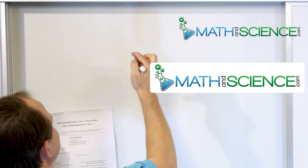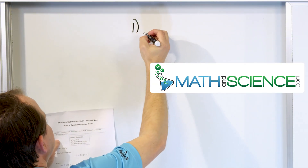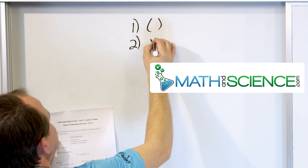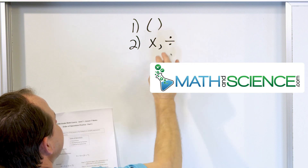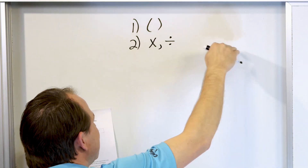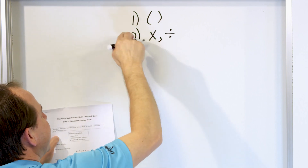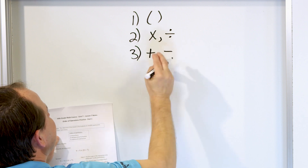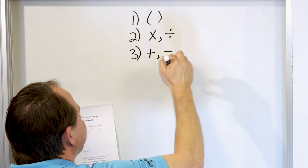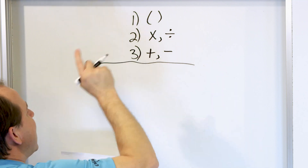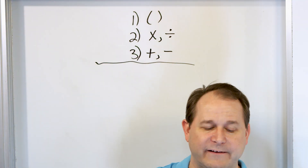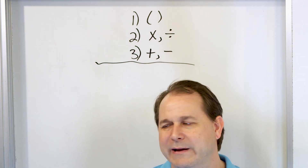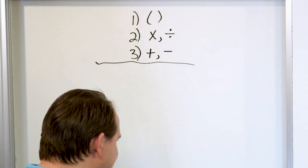Our order of operations are quite simple. The very first thing we do is we always do parentheses first. After that, we look for any multiplications and divisions — multiplying and dividing are on the same priority level; one is not higher than the other. Then finally, we do any additions and subtractions, which are also on the same priority. We don't have exponents yet; we'll cover exponents separately and fold them in a little bit later, but I want to get this practice first.